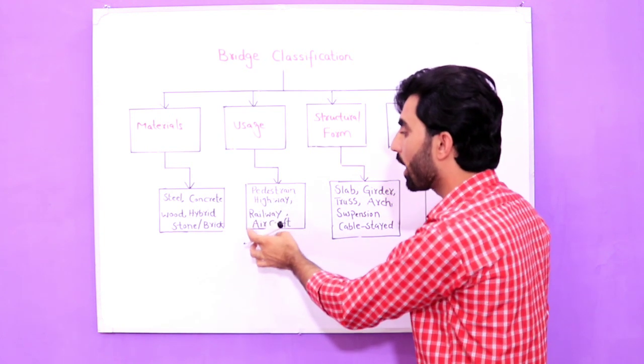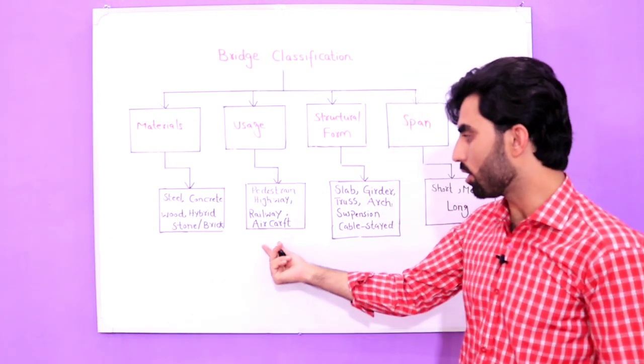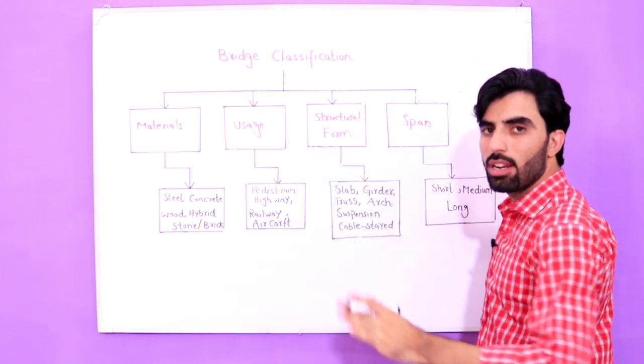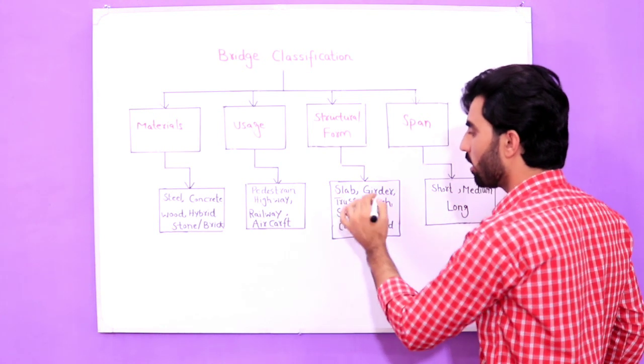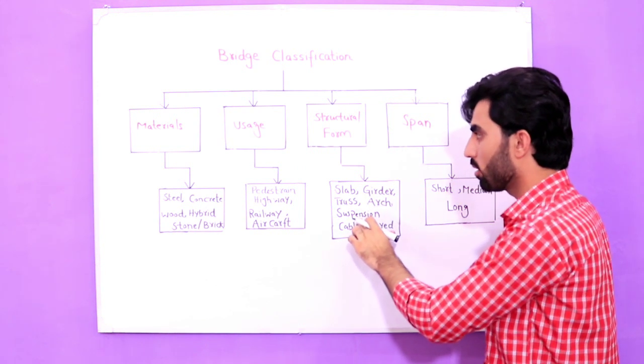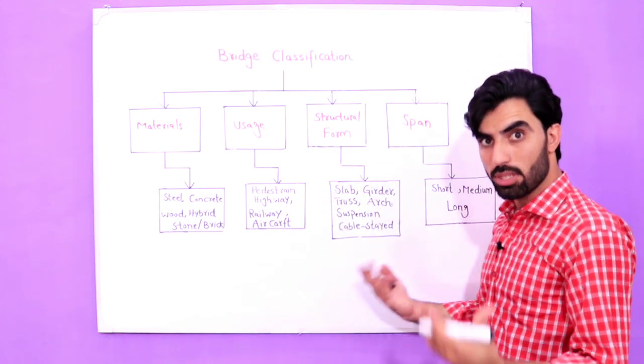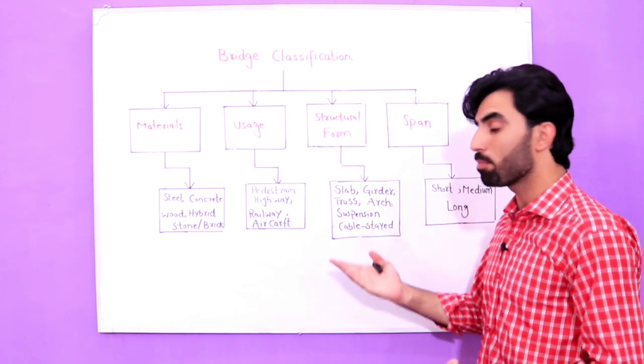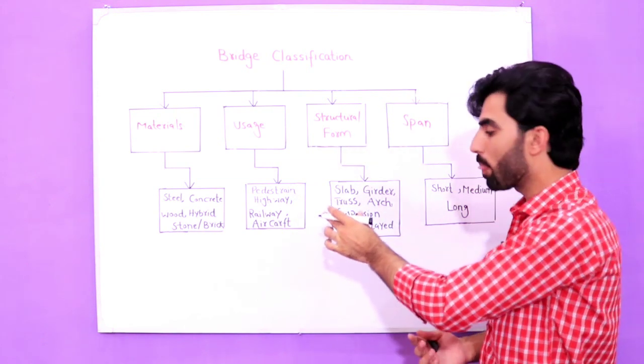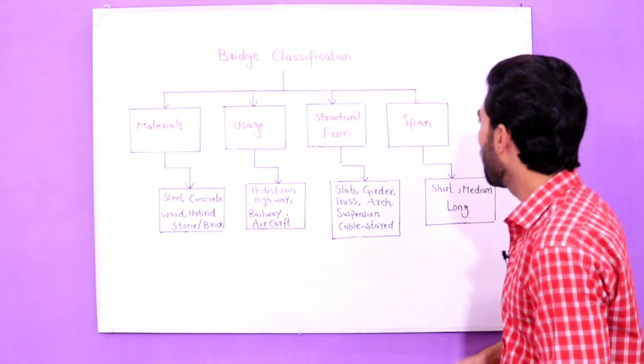In third stage we have a structure form. Structure form is slab, girder, truss, arch, suspension, and cable-stayed. There is slab bridge, girder, truss bridge, arch bridge, suspension bridge. These are structure forms, and cable-stayed bridge.